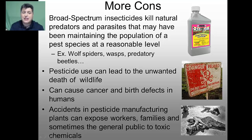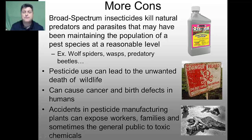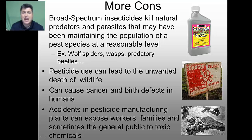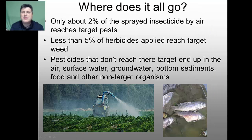Increased pesticide use could also lead to unwanted death of wildlife or cause cancer and birth defects in humans, as many chemicals found in pesticides can be mutagenic or teratogenic. Accidents in pesticide manufacturing plants can expose workers, families and sometimes the general public to toxic chemicals. For example, in 1984 we saw one of the world's worst chemical accidents at the Union Carbide plant in India, where a gas leak of chemicals used to make an insecticide went through a small village, leading to many immediate deaths and continued harm — including increased rates of birth defects and a lower life expectancy — to the population around Bhopal, India.